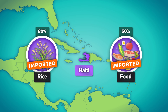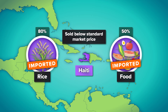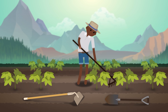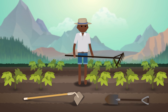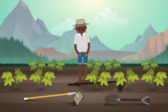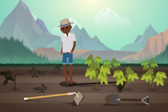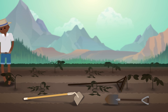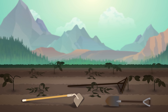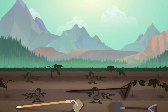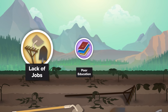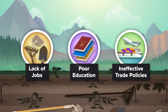In an attempt to make this food affordable, the countries exporting it often sell it below standard market price. However, as a result, local Haitian farmers often can't compete with the price of this cheaper imported food, which can eventually put them out of business. Suddenly, Haiti has even less homegrown food, and so is even more dependent on aid. Meanwhile, the deeper challenges underlying Haiti's widespread food insecurity persist, like lack of jobs, poor education, and ineffective trade policies.